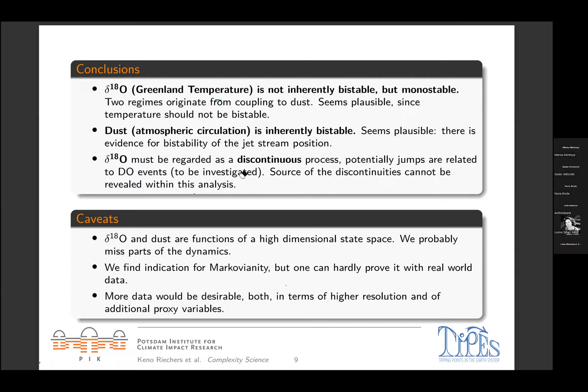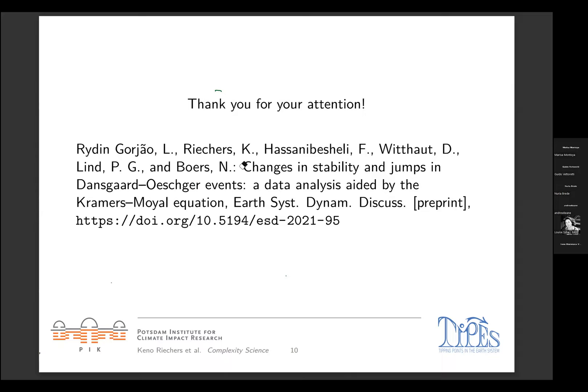There are some caveats to our approach. The records of δ18O and dust are functions of a very high-dimensional climate state space, and probably they don't tell the whole story — we may be missing parts of the dynamics by looking only at these two variables. Next, we find indication for Markovianity of both time series, but it is difficult to prove from a time series alone that it was generated by a Markovian process. Finally, as always in paleoclimatology, more data would be desirable, both in terms of higher resolution and additional proxy variables.